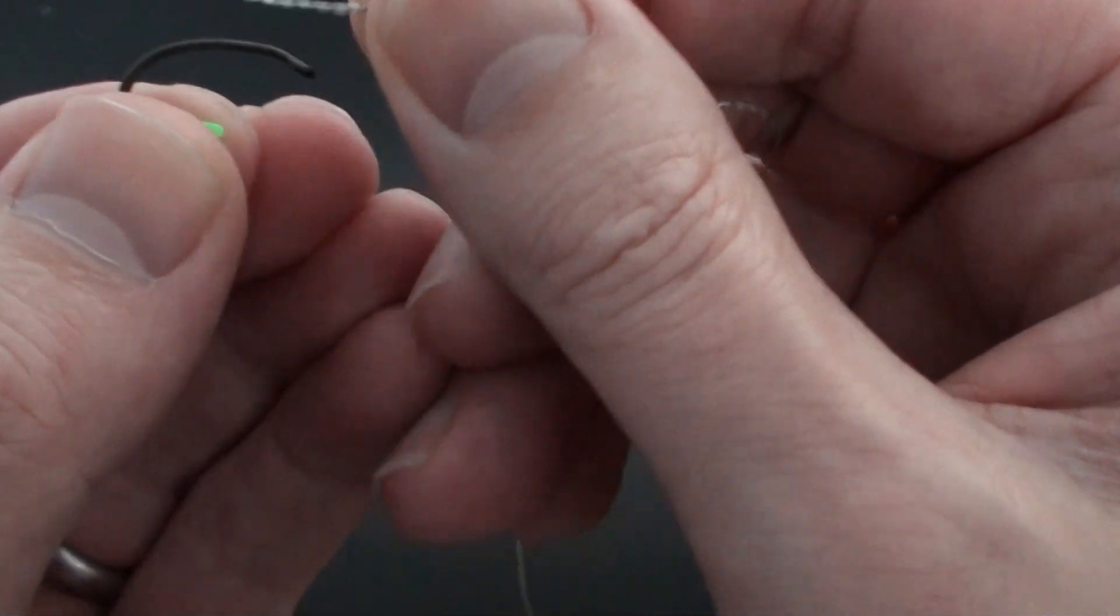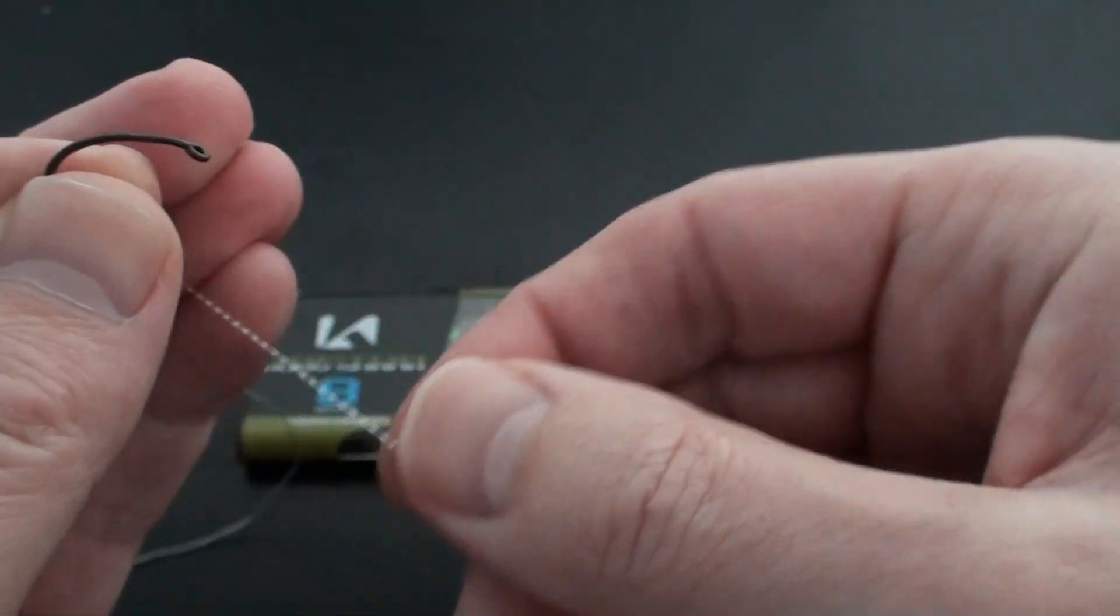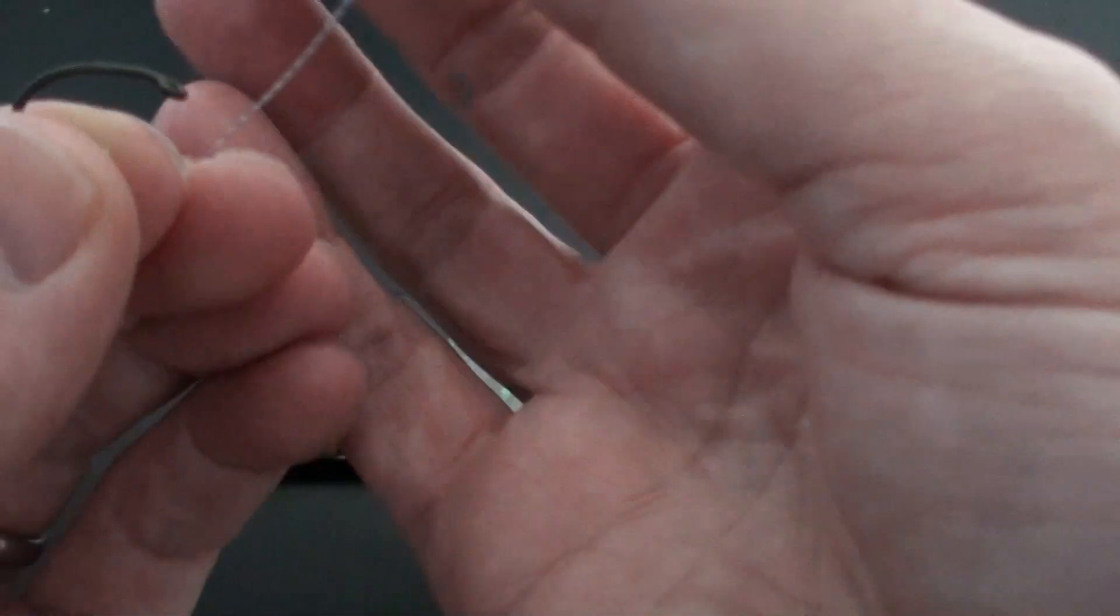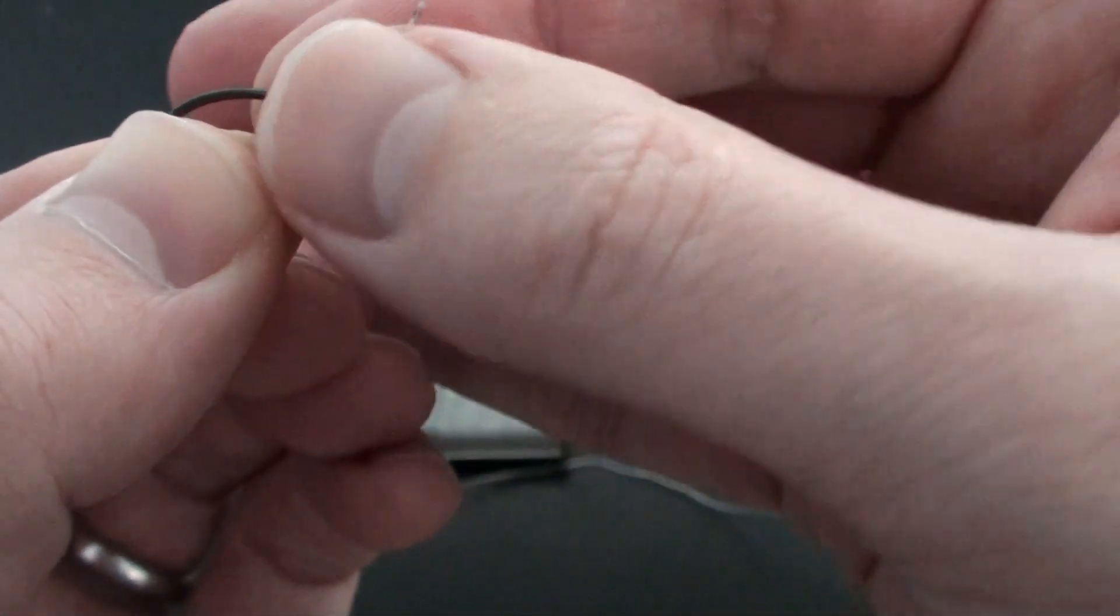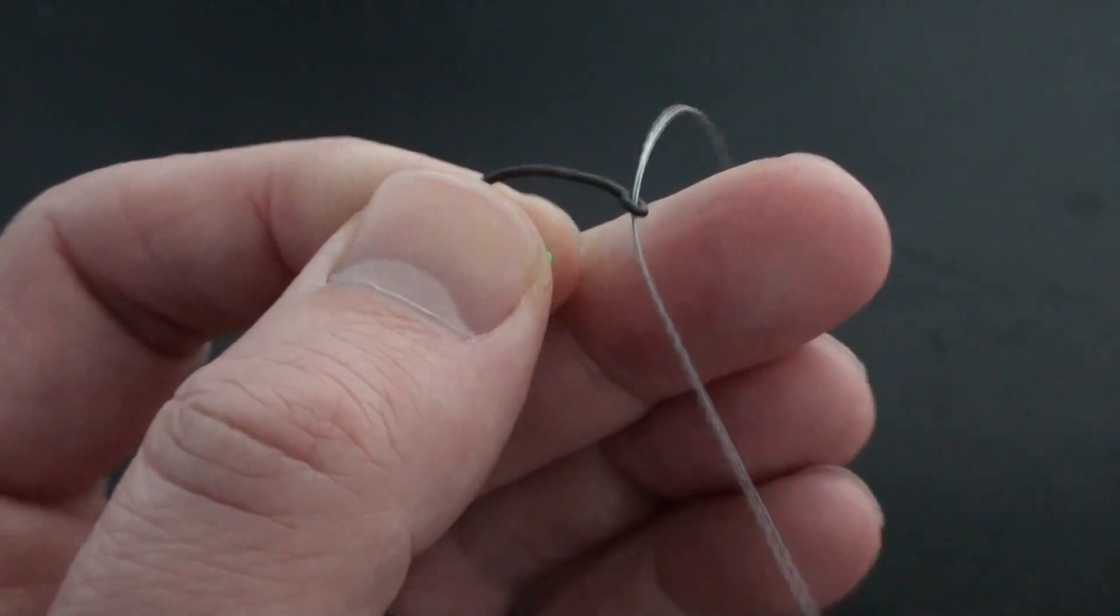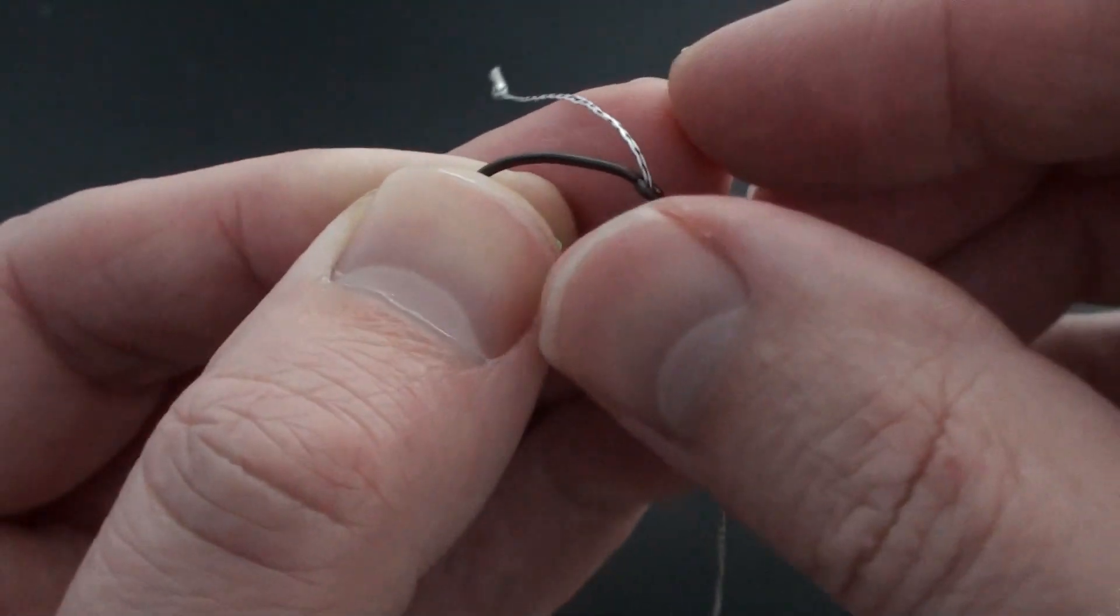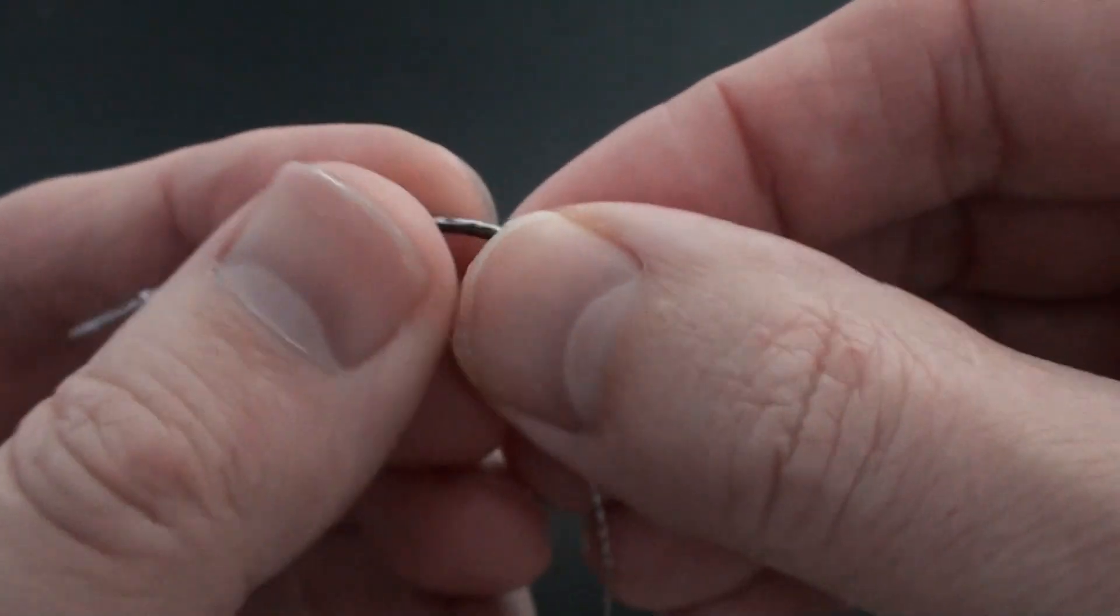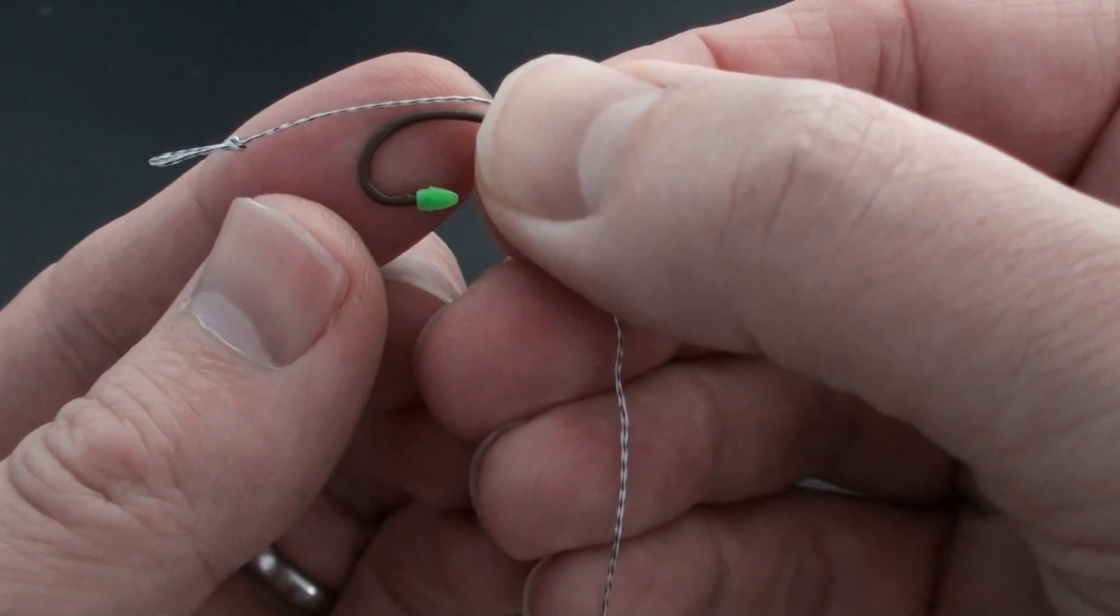So we just take our hook, hold it in the palm of our fingers. We take the end of the hook length material. All we do is pass that through the eye of the hook facing downwards, like so, and we pull it nice and tight until you get the appropriate hair length that you want. So in this case we are probably going to have just about an inch.